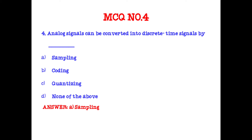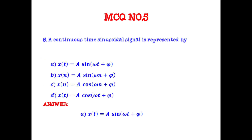A continuous time sinusoidal signal is represented by which expression? The answer is option A: x(t) = A sin(ωt + φ), in which A denotes amplitude, ω denotes angular frequency, and φ denotes phase angle in radians.